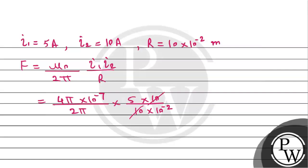So 10 and 10 cancel. 2 goes into 4 twice. π and π cancel. 10 to the power minus 2 and 10 to the power minus 7 gives us 10 to the power minus 5. But 5 times 10 gives us 50, so 10 to the power minus 5 becomes 10 to the power minus 4. So the required force magnitude comes out equals to 1 into 10 to the power minus 4.